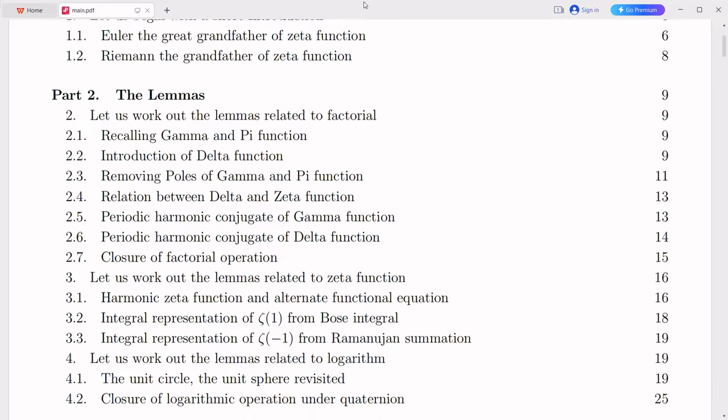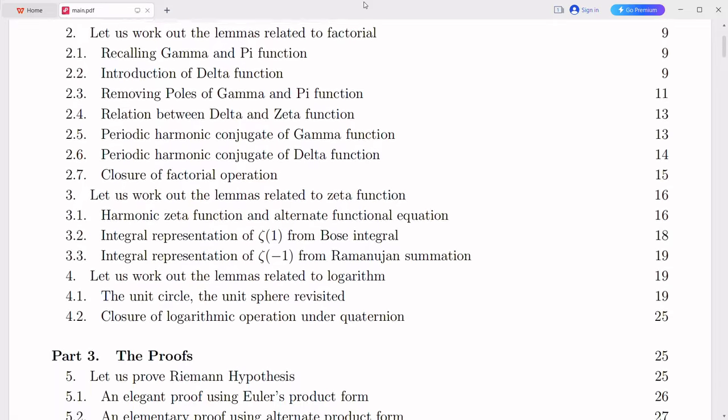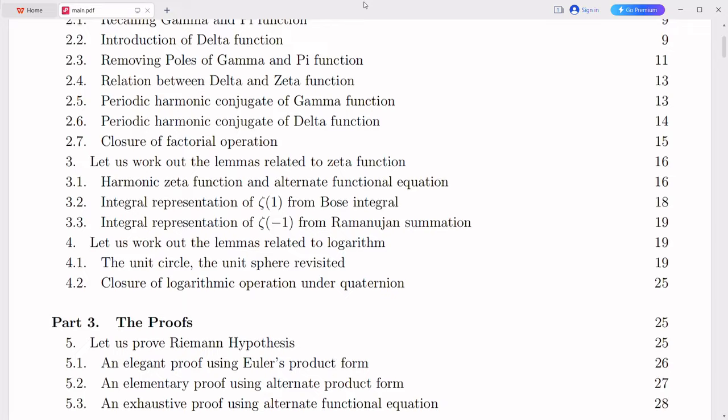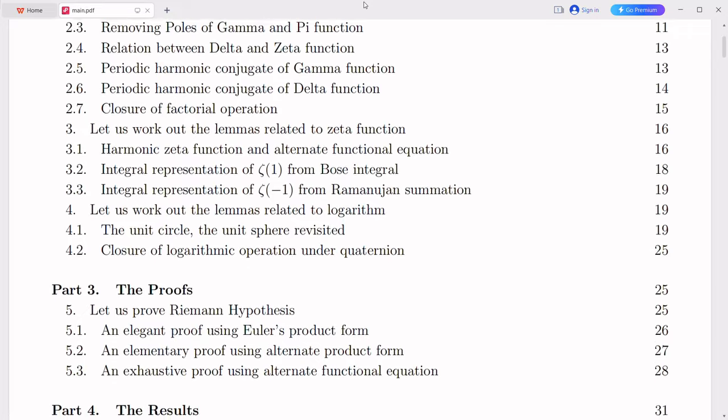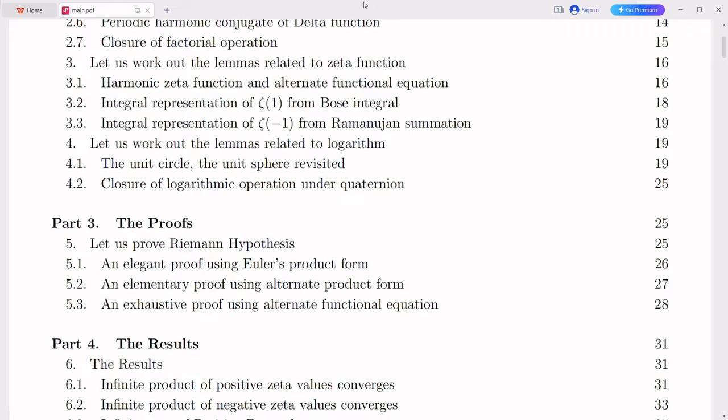It revolves around the distribution of prime numbers and their connection to the zeros of the Riemann zeta function. The Riemann zeta function is a complex valued function defined for complex numbers s with real part greater than 1.